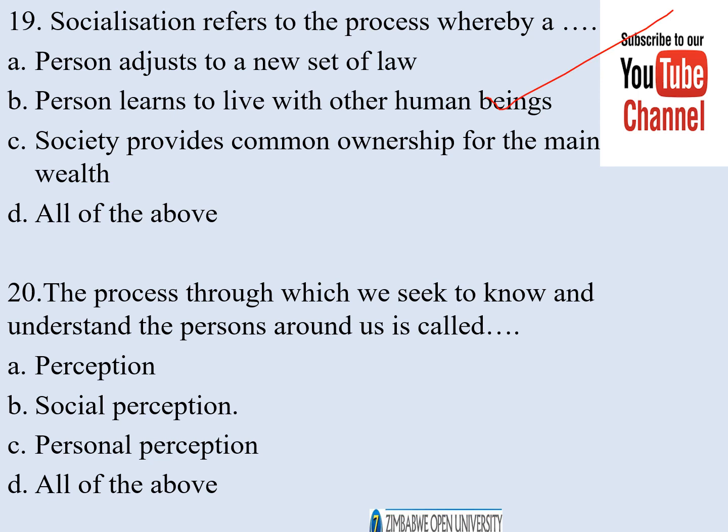Number twenty. The process through which we seek to know and understand the persons around us is called: a) perception, b) social perception, c) personal perception, d) all of the above. The correct answer is b — social perception.